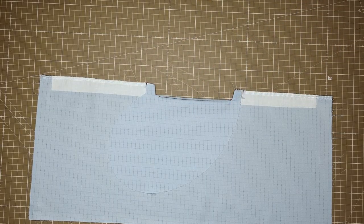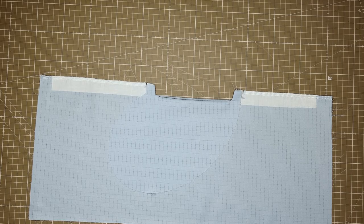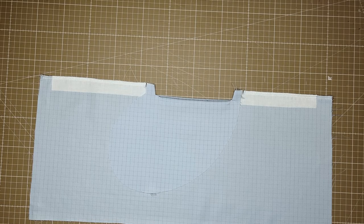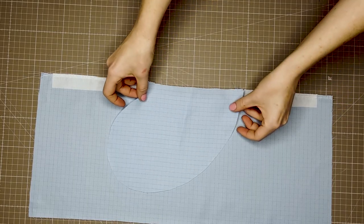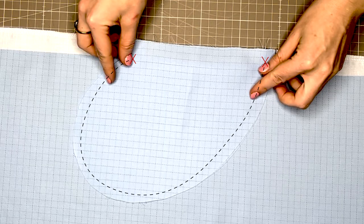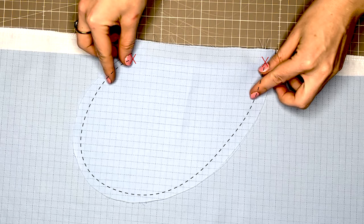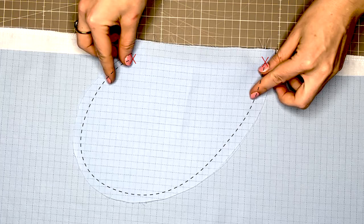Wrong side up now, take your second pocket bag and align it on top of your first, right sides together. We're going to stitch around the very edge of the pocket, beginning and ending where the red X's are marked, which is the edge of your previous stitches, the horizontal lines of the box we sewed in the first step.